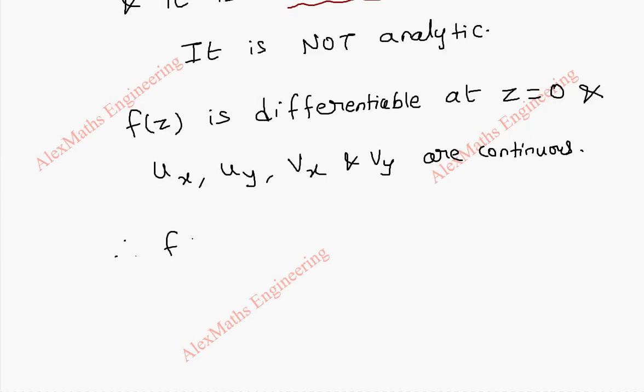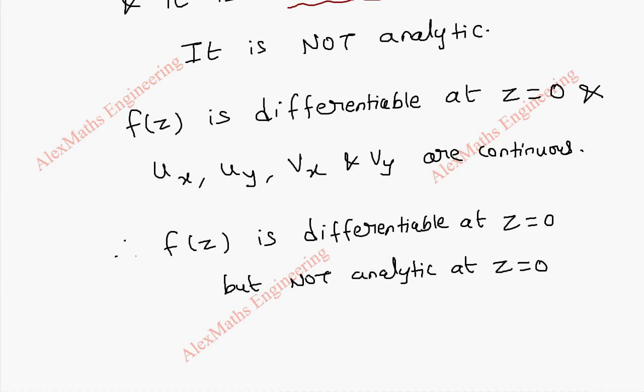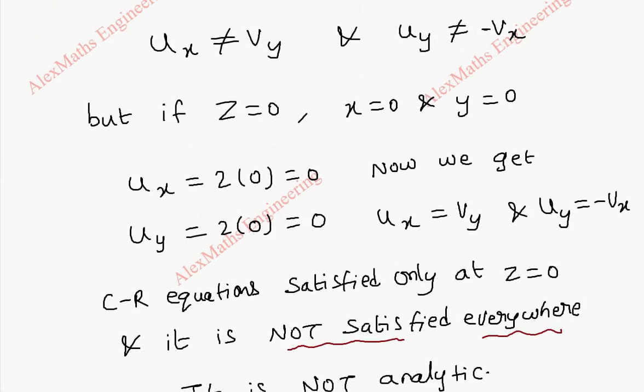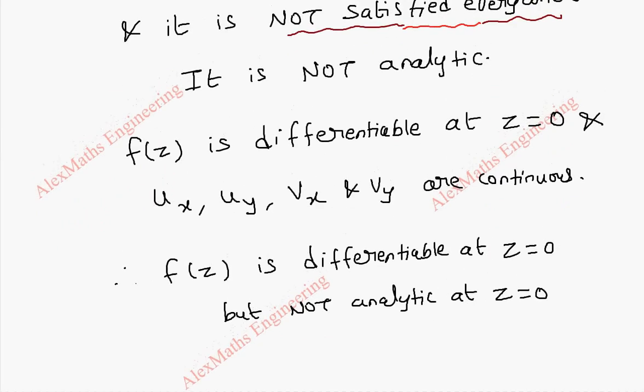Therefore f(z) is differentiable at z = 0 but not analytic at z = 0. Even though at specific point when z is 0 (that is when x is 0 and y is 0) the C-R equations are satisfied, it is only at specific point. But for any other point, that is everywhere, it is not satisfied. So we cannot conclude it is analytic but we have to say it is not analytic even at z = 0.